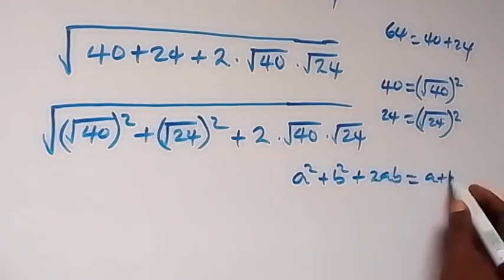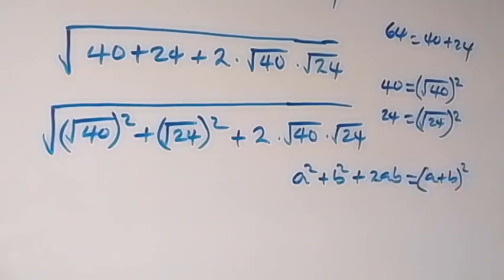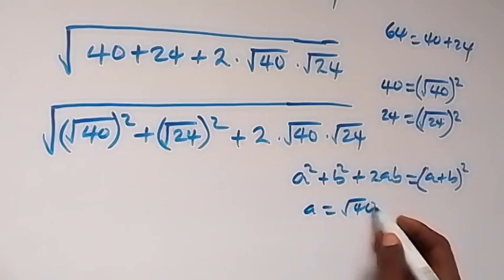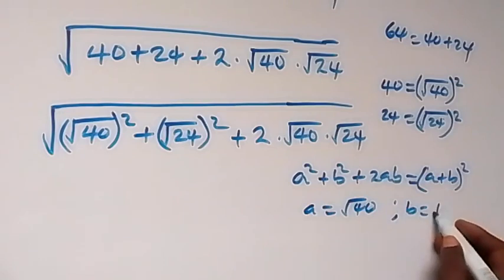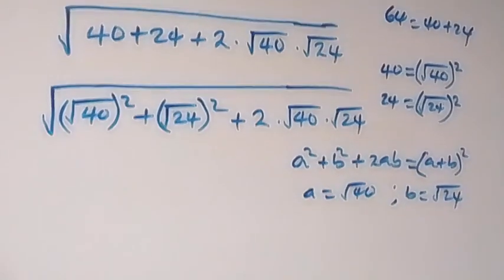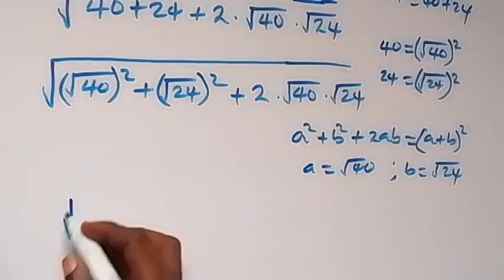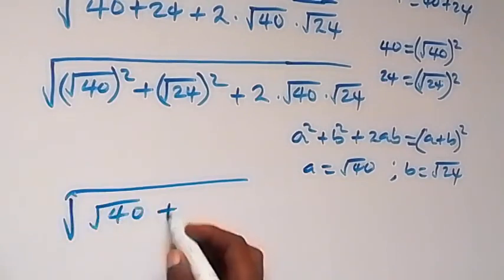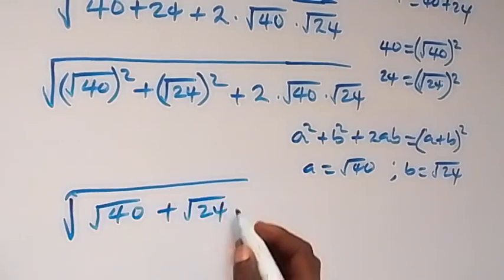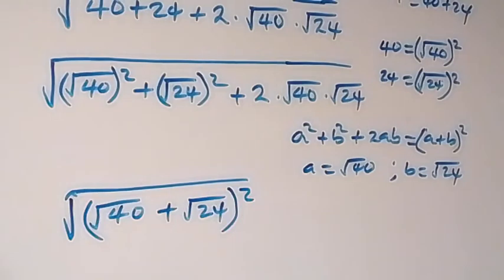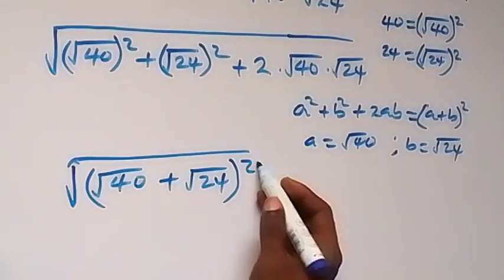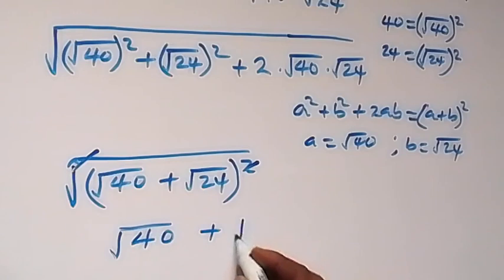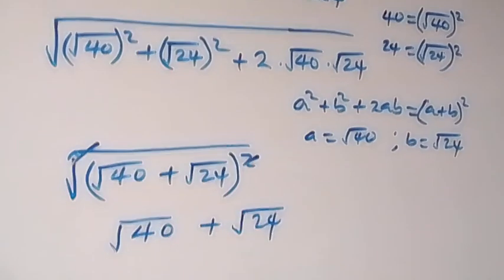Comparing with the pattern a² + 2ab + b² = (a + b)², here a = root 40 and b = root 24. So this can be written as the square root of (root 40 + root 24)². The square and square root cancel, leaving us with root 40 plus root 24.